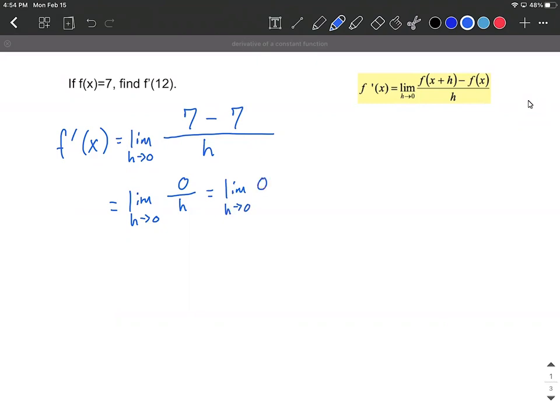You'll see that our place where we could put in 0 for h has gone away. So the limit of a constant here is just going to be the constant itself. So f prime of x equals 0. We want to compute that derivative at 12. It's still going to be 0.